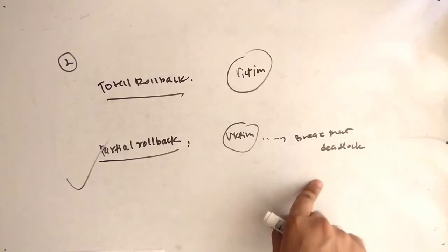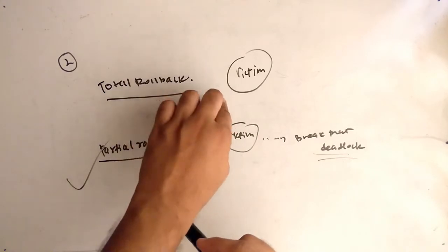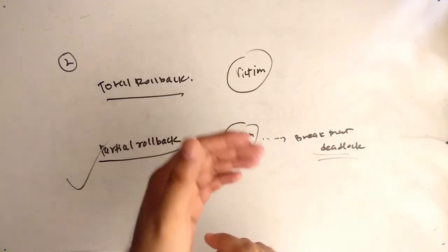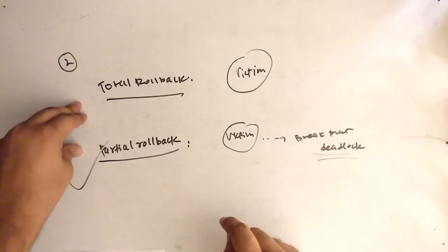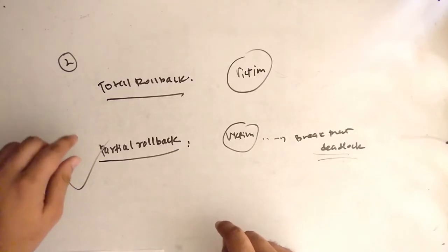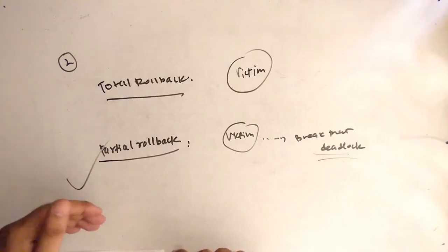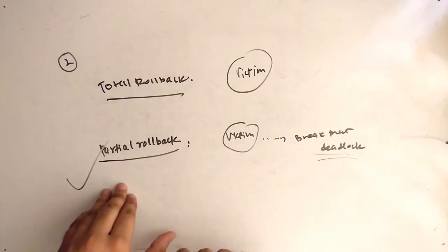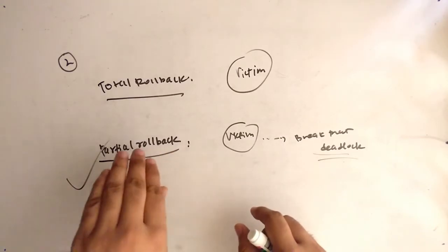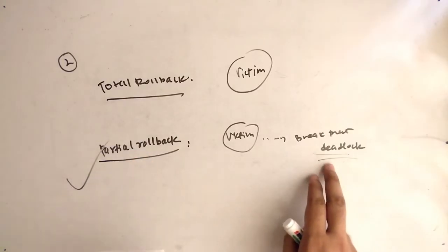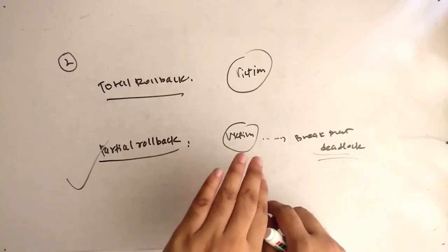To recap: the first point is victim selection with specific conditions. The second point is rollback — either total rollback or partial rollback. The effective way among them is partial rollback, because the victim is rolled back only up to the point where it breaks the deadlock, whereas in total rollback the victim is rolled back completely.